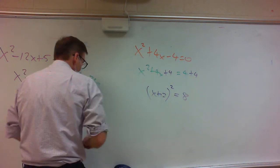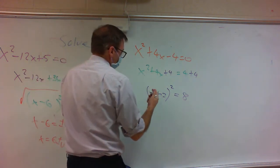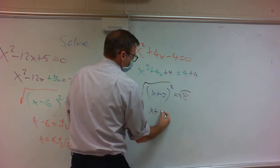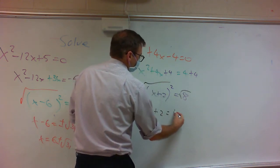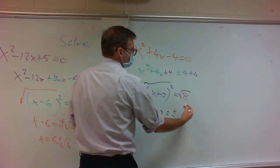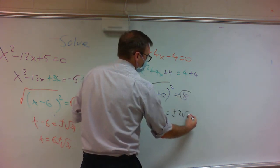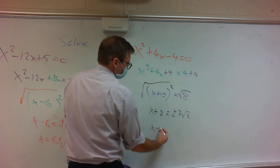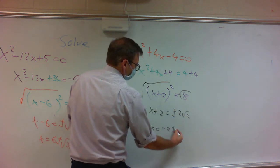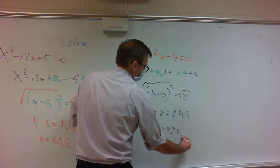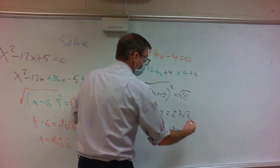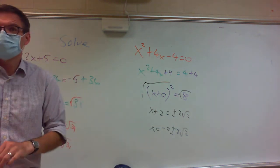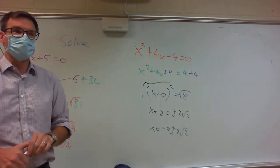Take the square root of both sides. That gives me x plus 2 equals plus or minus, and the square root of 8 is 2 square roots of 2. So x equals negative 2 plus or minus 2 square roots of 2. I'm glad we got the same answer as before — because if we didn't, we'd have a problem.